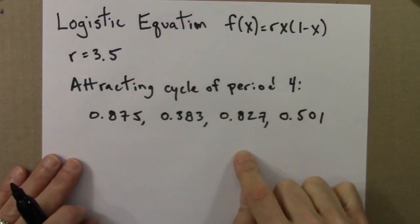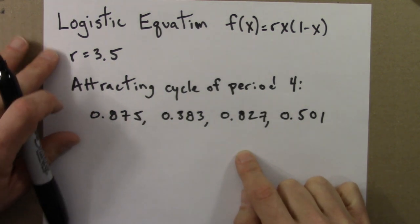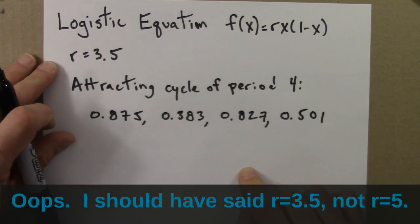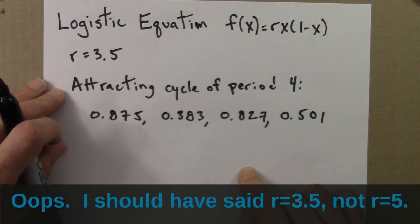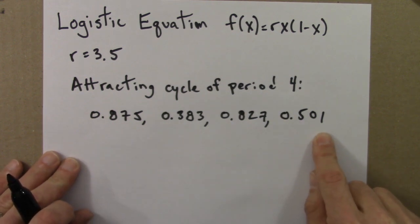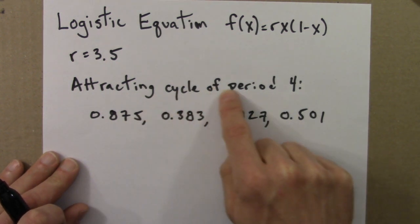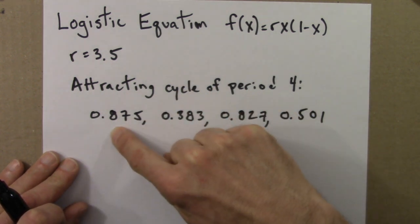Let's summarize the experiments we just did on the computer. We were looking at the logistic equation with r equals 3.5, and we found an attracting cycle of period 4. And looking at the orbits, the numbers, we found that it cycles among these numbers. It's period 4 because it takes 4 iterations to cycle back. 1, 2, 3, and then it repeats.